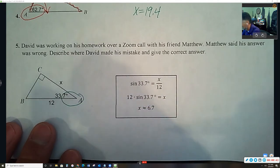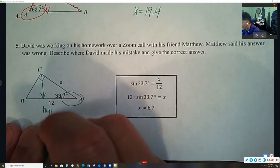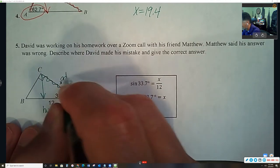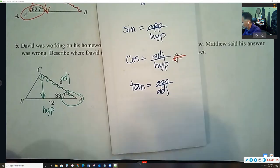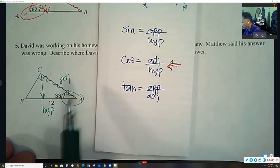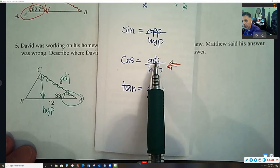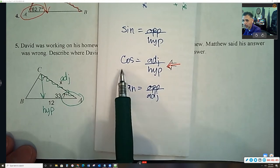Here's the angle we're using, angle A. This side is the hypotenuse. This side is adjacent to angle A. If I look at the ratios, the ratio cosine uses adjacent and hypotenuse. So I know we need to use the cosine ratio.